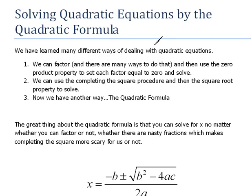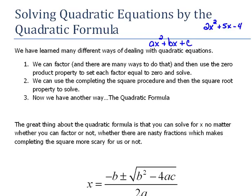Just to clarify, a quadratic equation is something in the form of ax squared plus bx plus c — some number in front of the squared variable, some number with just the plain variable, and then a constant. Any one of those numbers could be a 1, and this last number could even be 0. We see things like 2x squared plus 5x minus 4 — anything in that form where the highest power of x is squared. That's what we mean when we say quadratic.